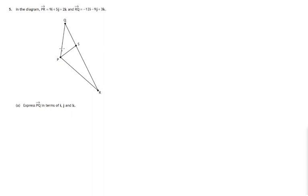So here we have a diagram with a triangle and a line PS drawn in it and we're told various pieces of information about vectors. We're asked to express PQ in terms of i, j and k.